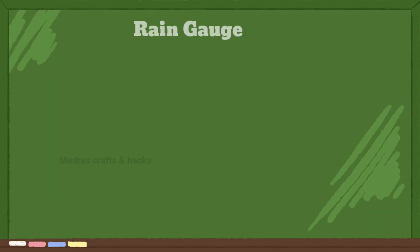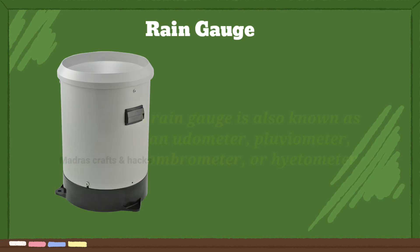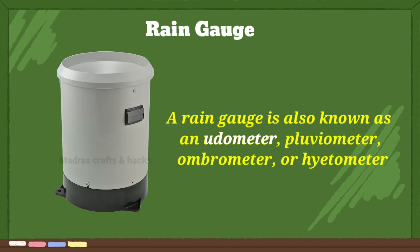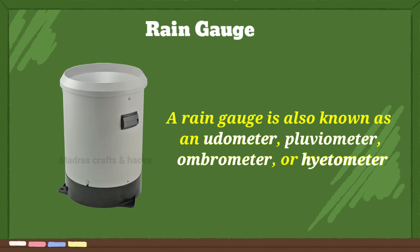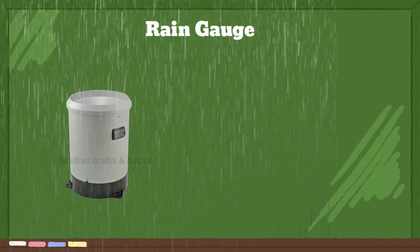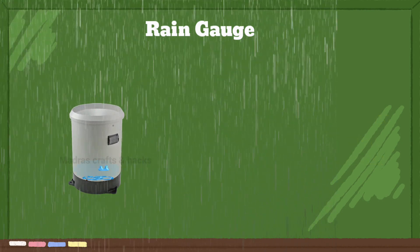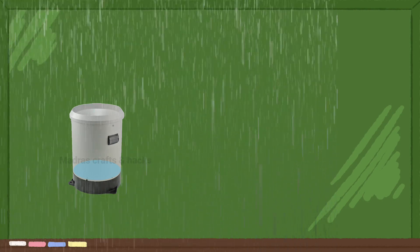Rain is measured using a rain gauge. It is also known as a nudometer, pluviometer, ombrometer, or hiatometer. It is a meteorological instrument that measures the amount of liquid precipitation over a specific area and time period.